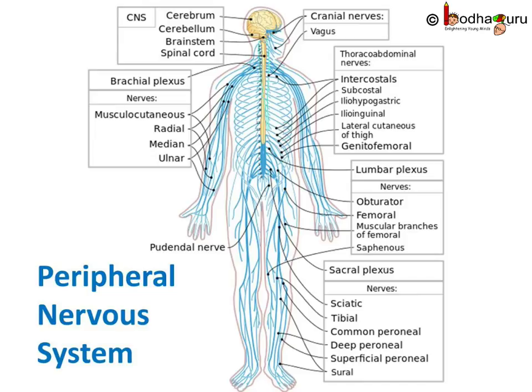For example, the autonomous nervous system coordinates with the medulla oblongata to control our heartbeat, breathing, vasomotor activity, etc.